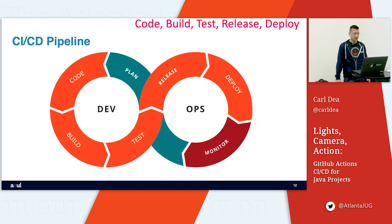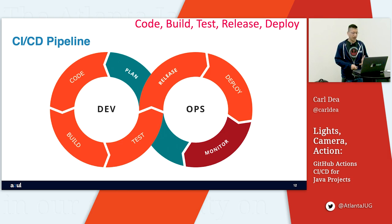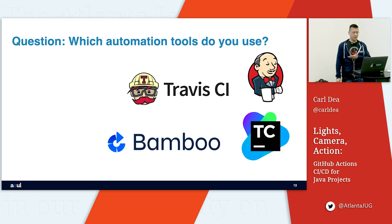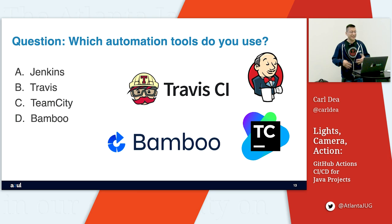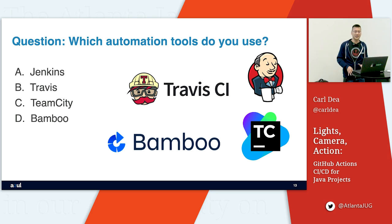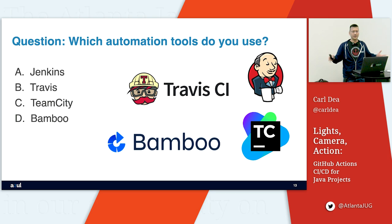These tools are like robots that automate all your processes. All that orange section is just automated — you don't have to think about it. When you check in your code, there are events within Git and other source repository facilities that trigger on things like pushing code or creating a pull request.